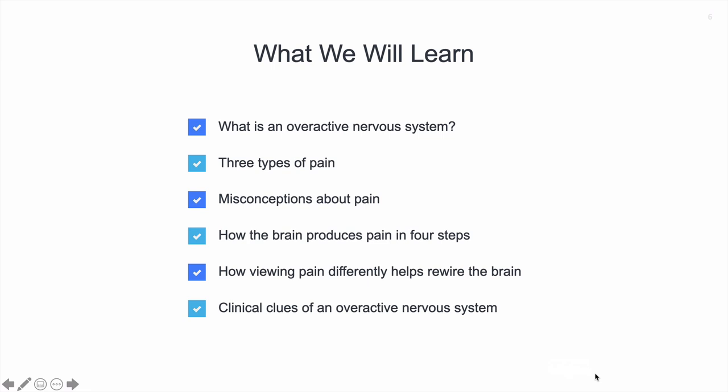What are we going to learn here today? What is an overactive nervous system? We're going to focus a lot on that. We're going to talk about different types of pain, misconceptions about pain, how the brain produces pain — walking through four specific stages — and how viewing pain differently actually helps us rewire the brain. We'll also look at the signs of an overactive nervous system.